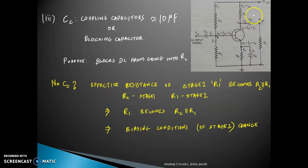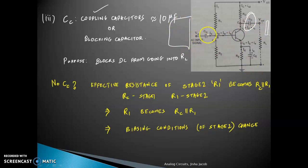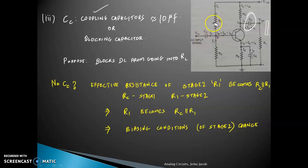The next capacitor is the coupling capacitor C-C, also called the blocking capacitor. The input capacitor C-in can also be called a coupling or blocking capacitor because it couples with a previous stage if one exists. For this single stage, we call C-C the coupling or blocking capacitor.